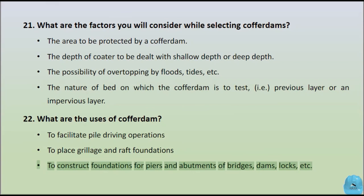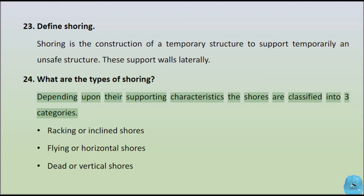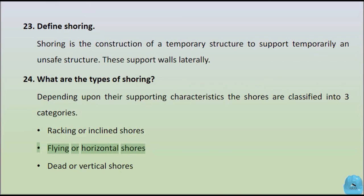Question 23: Define shoring. Shoring is the construction of a temporary structure to support temporarily an unsafe structure. These support walls laterally. Types of shoring, depending upon their supporting characteristics, the shores are classified into three categories: racking or inclined shores, flying or horizontal shores, and dead or vertical shores.